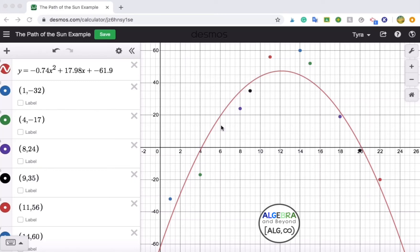Alright, I wanted to show you an example of how to graph your quadratic equation for the Path of the Sun project.